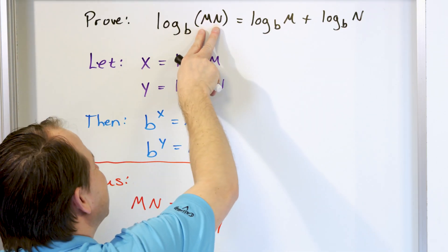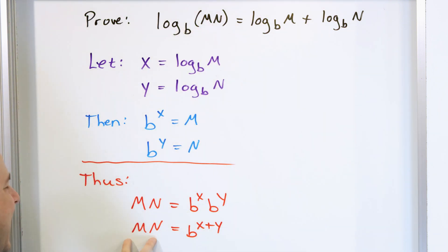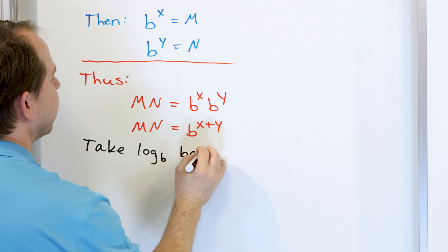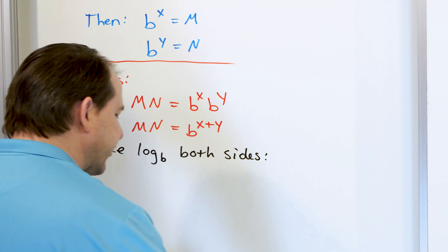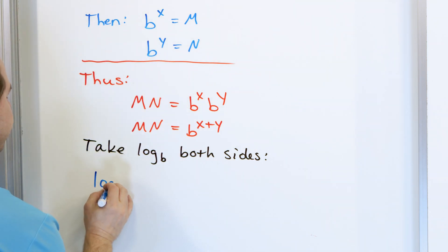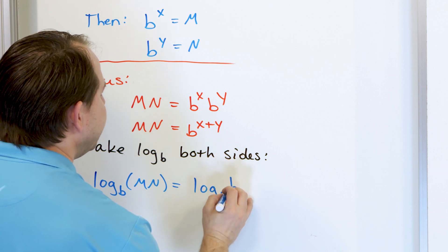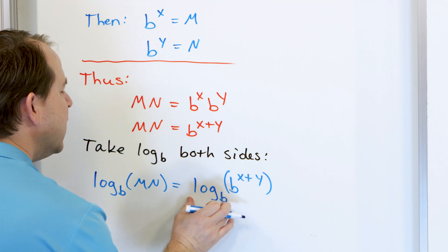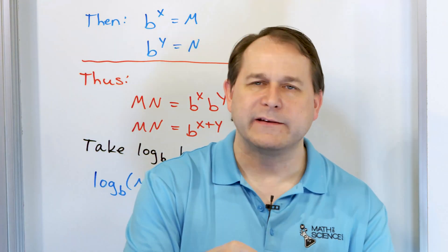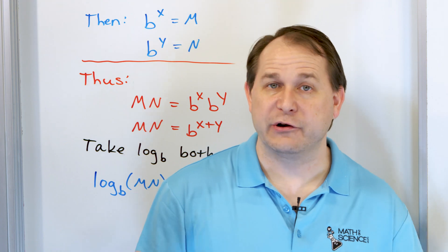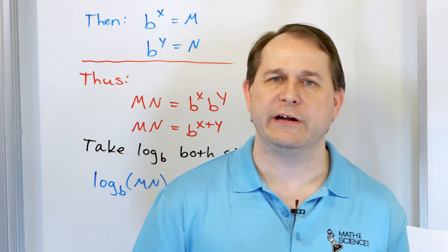Now I have m times n, and I'm trying to take the logarithm of that. I have an expression for what m times n actually is. So I'm going to take the log of both sides — log base b of both sides, because I can do anything to an equation as long as I do it to both sides. So log base b of m times n equals log base b of b to the power of x plus y. The logarithm with base b is the inverse function of an exponential with base b — they annihilate each other.